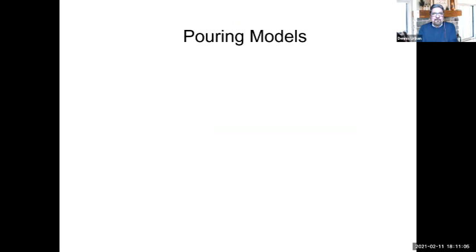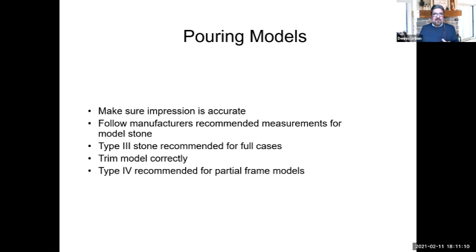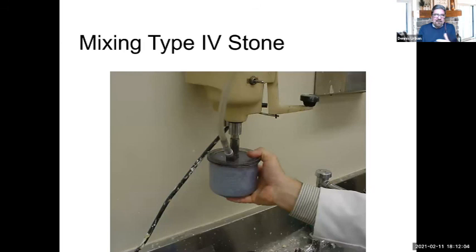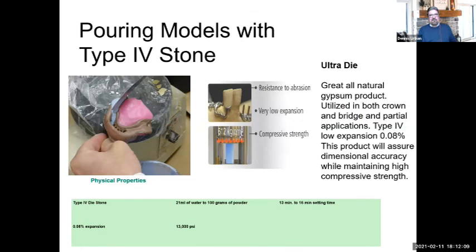I like to present the laboratory aspect of things so you get an idea of what we need and what we do to provide the best outcome. For pouring models on denture cases, I like to use a type three stone — it's better for full cases because when we deflask a case after processing, if you use a type four die stone it might break the denture. We want something that will give a little when deflasking. We use type four stone — which has higher compressive strength — for partial dentures because the model goes on and off repeatedly, and we want something that holds up to that wear and tear.